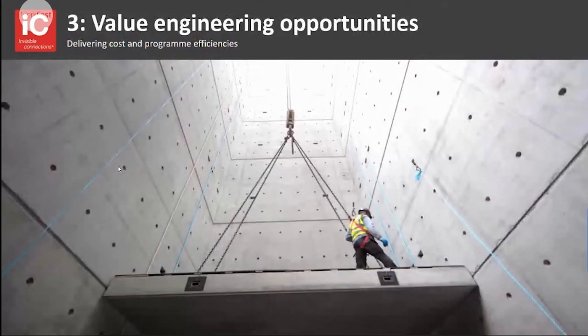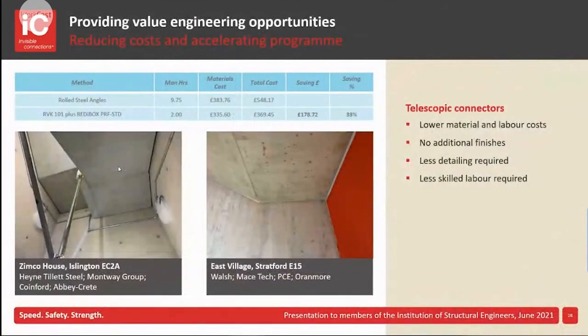When it comes to value engineering and reducing costs and accelerating programme, sometimes people think that because the technology is relatively new it's going to be prohibitively expensive. But we've done a peer-reviewed costing analysis comparing installing landings using rolled steel angles versus telescopic connectors, and taking into account time and cost of materials, we found a 33% saving in labour and materials. This was done a couple of years ago, and as Steve mentioned, two connectors is less than half the weight of steel of an angle — and with steel prices having rocketed, that saving is going to be even greater now.